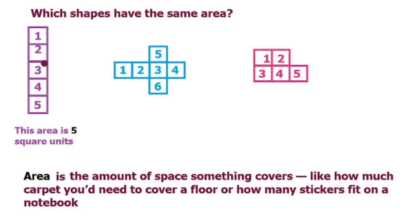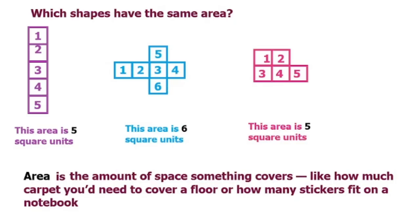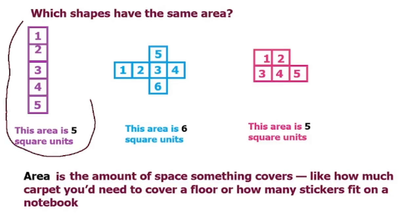So now we know that this area is five square units — we counted the number of squares. This area is six square units, and similarly for the little pink one, this area is five square units. So we can see that this one has five square units and this one has five square units, so we know the area for this one is the same as the area for this one.